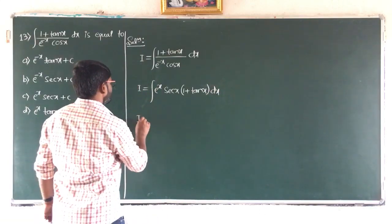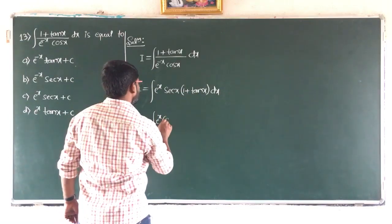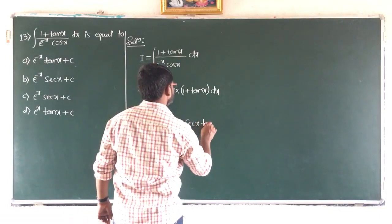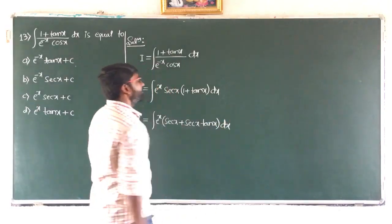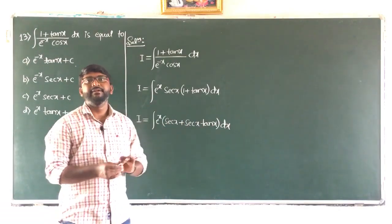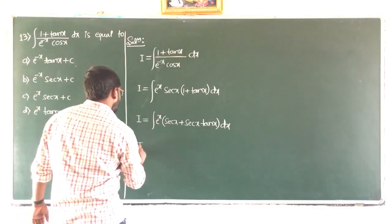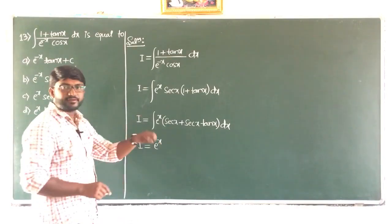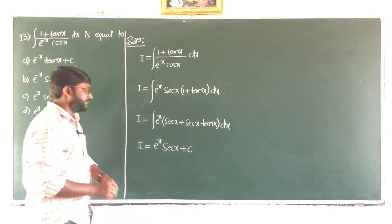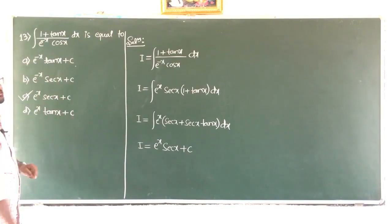So I equals integral of e^x · sec x · (1 plus tan x) dx. Multiplying sec x through: we get sec x plus sec x · tan x dx. Now this is in the form of integral of e^x [f(x) plus f'(x)] dx, and if that is the case the answer is e^x · f(x) plus c. Therefore I equals e^x · sec x plus c. Searching the options — it is option C: e^x · sec x plus c.